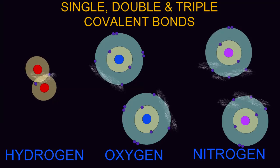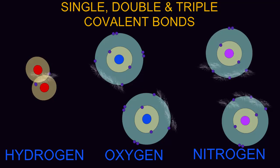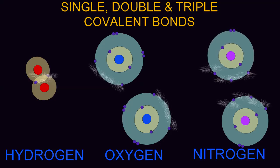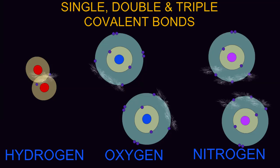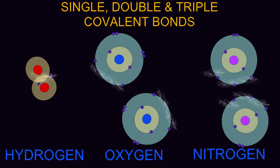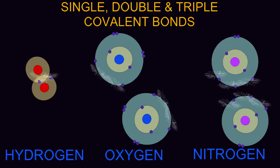Hydrogen atoms react with each other to form the gas H2, in which each hydrogen atom shares one electron with the neighboring hydrogen atom, so that each possesses two electrons around it at least some of the time. This is an example of a single covalent bond.